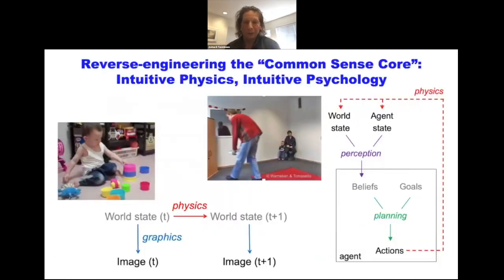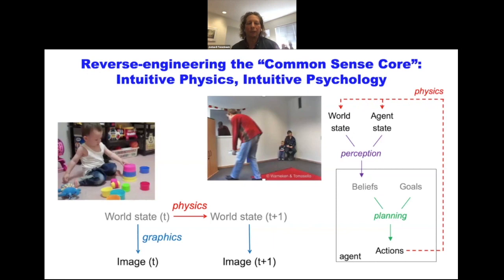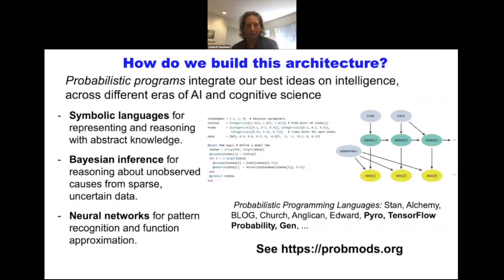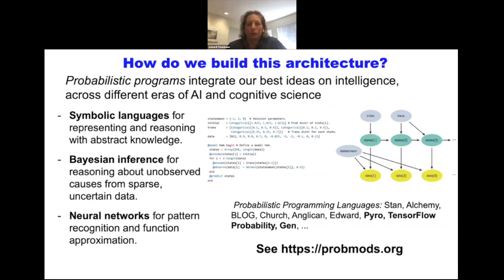What we're going to try to do is develop engineering accounts of core knowledge systems and how they might be learned. We've been working on this in intuitive physics settings as well as intuitive psychology. I want to use this to illustrate the computational building blocks we think are necessary. One is new kinds of AI programming languages — just as deep learning has TensorFlow or PyTorch, to engineer common sense we need new kinds of mathematical formalisms and associated programming language toolkits, and for us probabilistic programs are our best hope there.